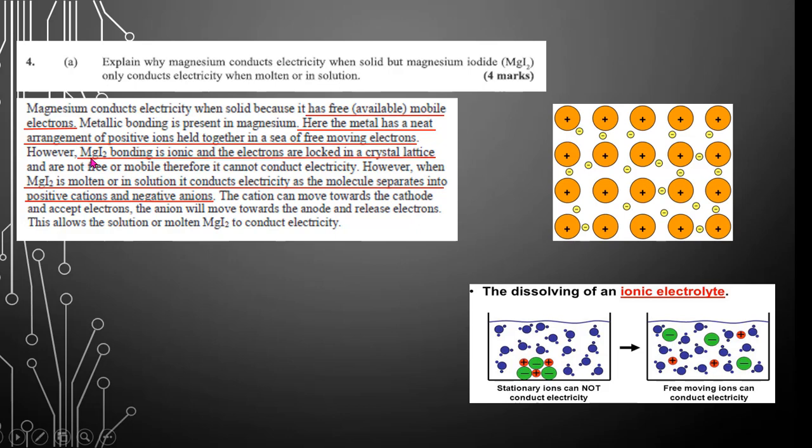However, magnesium iodide bonding is ionic, and the electrons are locked in a crystal lattice. So if you look here, there are no mobile electrons. This magnesium iodide is locked. There's no movement.